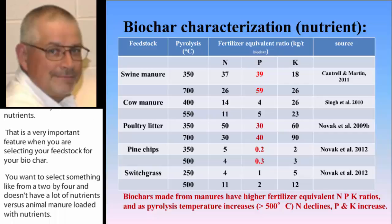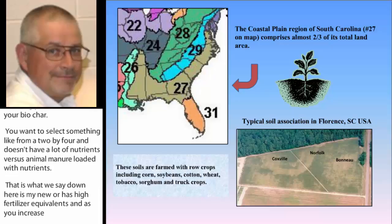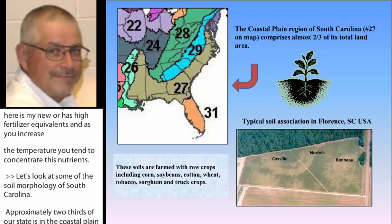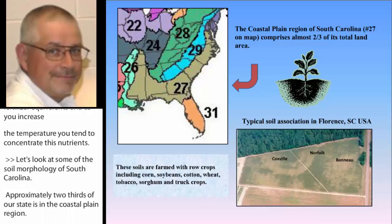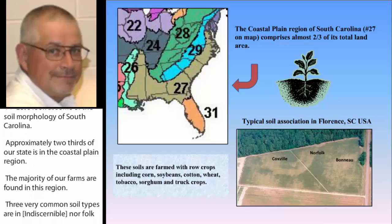Now let's look at some of the soil morphology of South Carolina. Approximately two-thirds of our state is in the coastal plain region, where the majority of our farms are found. Three very common soil types are the Coxville located in depressions, the Norfolk on side slopes, and the Bonneau in very upslope positions as a deep sand. In spite of these conditions, farmers commonly plant typical row crops including corn, soybeans, cotton, wheat, tobacco, sorghum, and an assortment of truck crops.